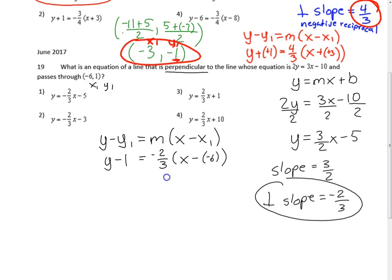The answer choices are in slope-intercept form, not point-slope form. Distributing -2/3: (-2/3)(6) = -4. So y - 1 = (-2/3)x - 4. Adding 1 to both sides gives y = (-2/3)x - 3, which is choice 2.